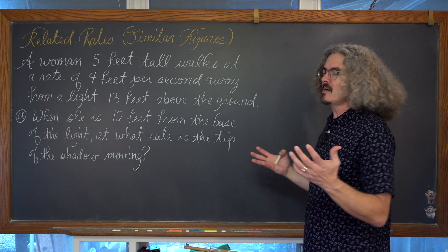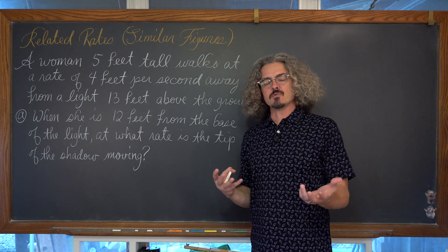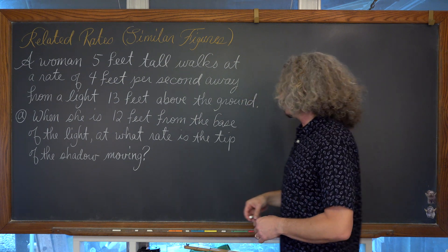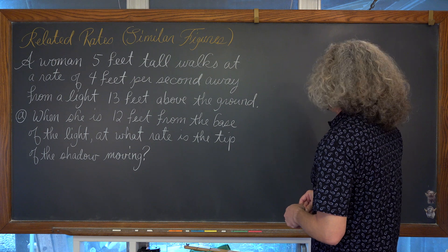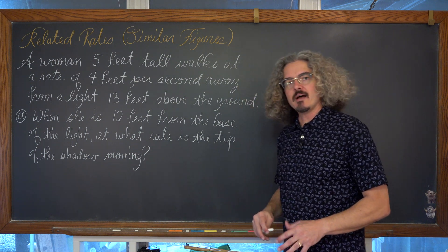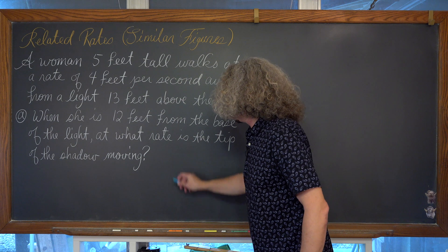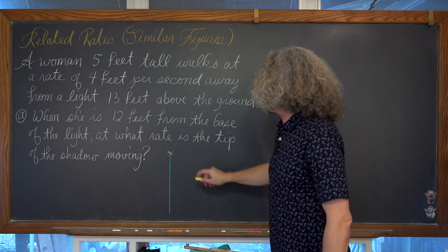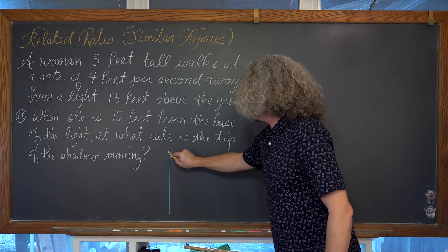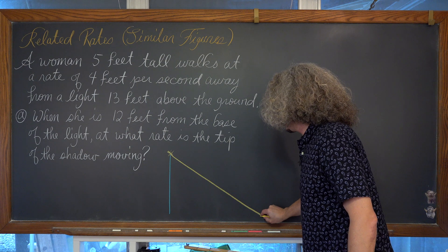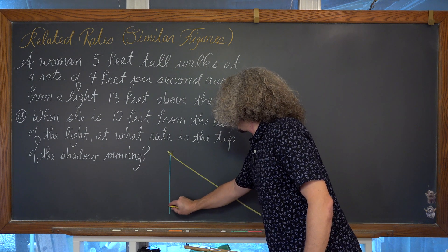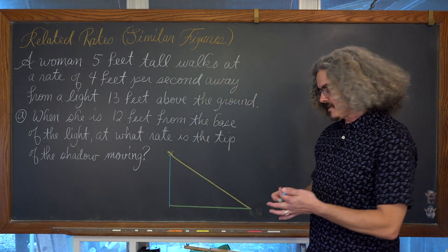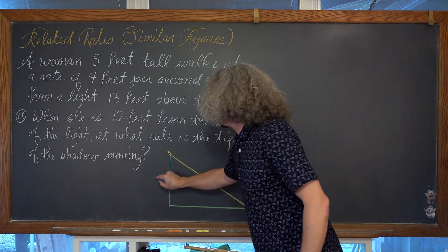Anytime you're dealing with a problem that involves geometry, you should allow yourself to actually see the geometry and the math that is going on. We're going to put the drawing right here. We've got a light pole, and at the top of this light pole there is a light casting light everywhere. This light is 13 feet above the ground, so we're going to put a 13 over here.